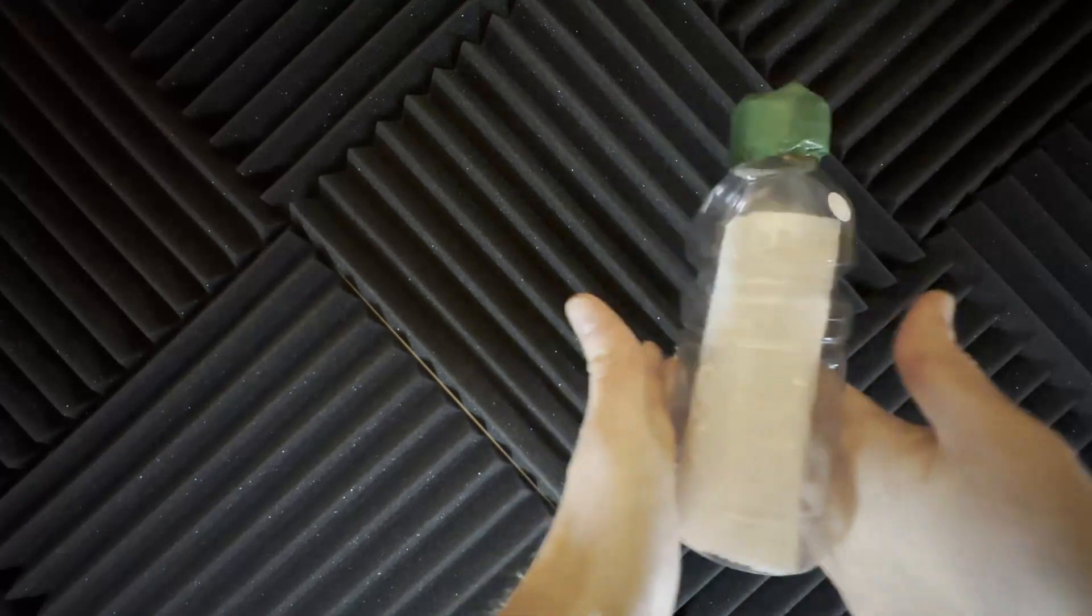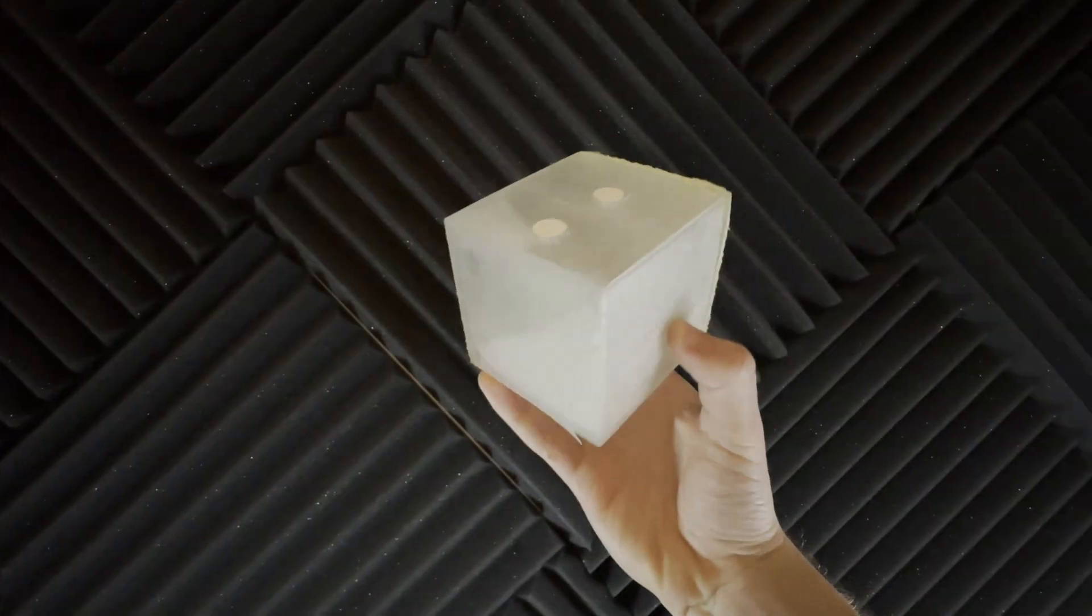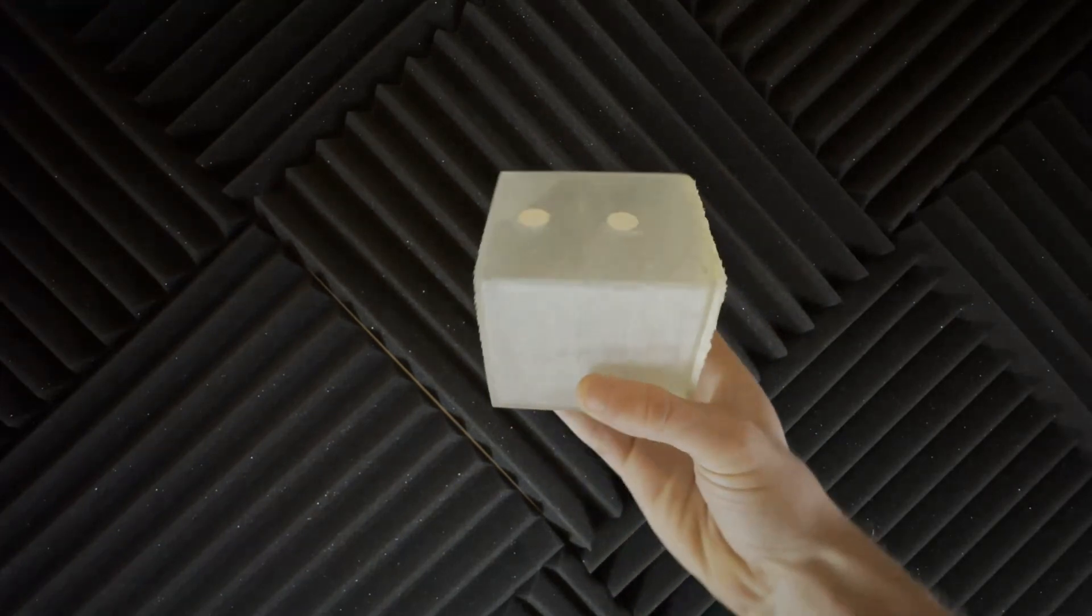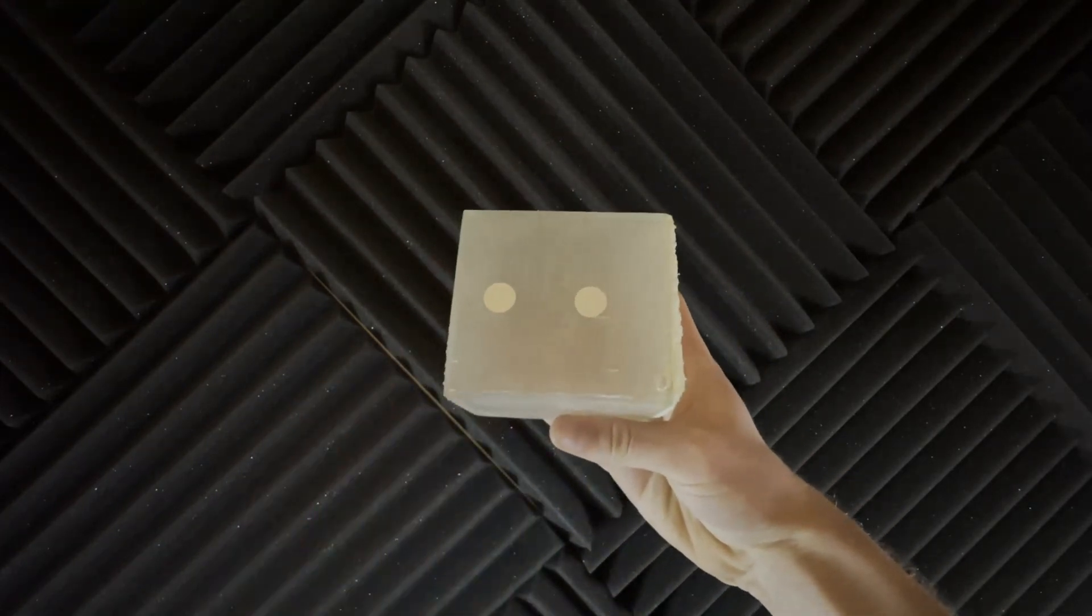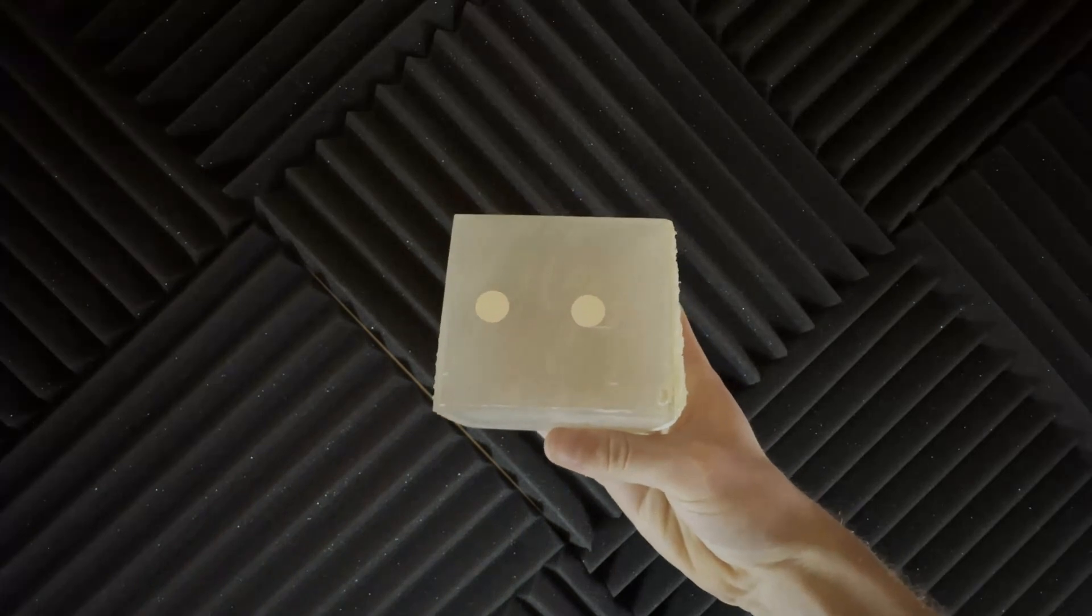Satisfied with our results, we moved on to a beta prototype. This is our beta prototype. It's a hollow cube, 3D printed with resin, and has two holes covered with the material.